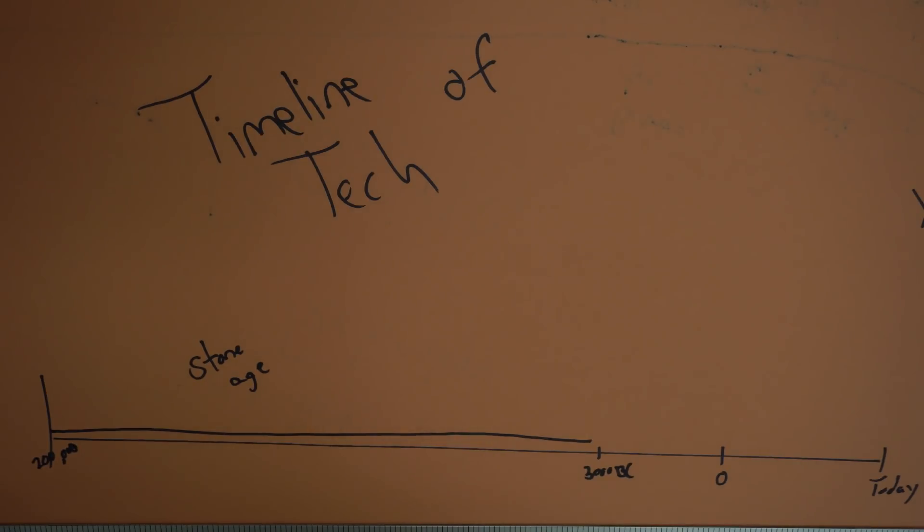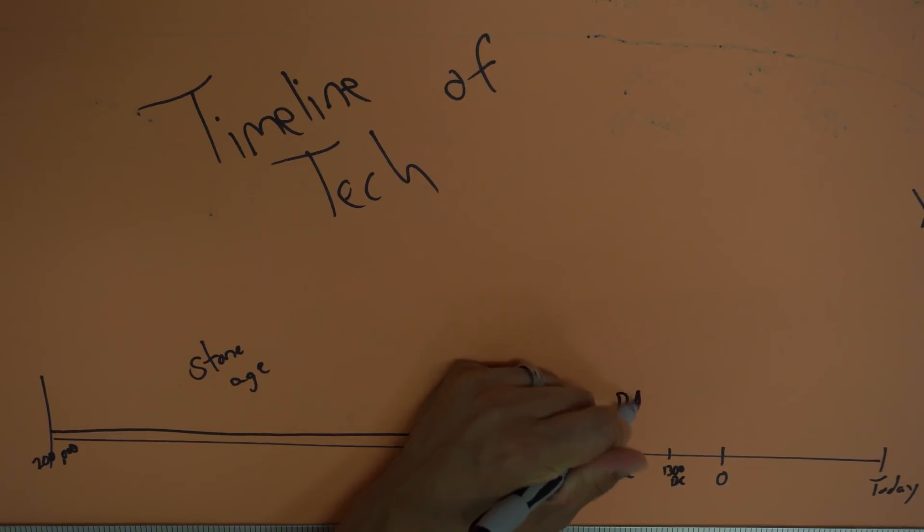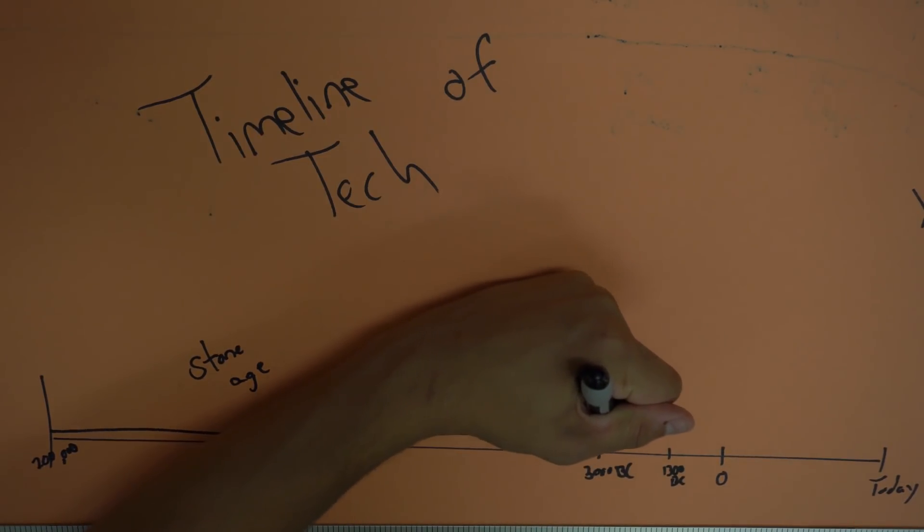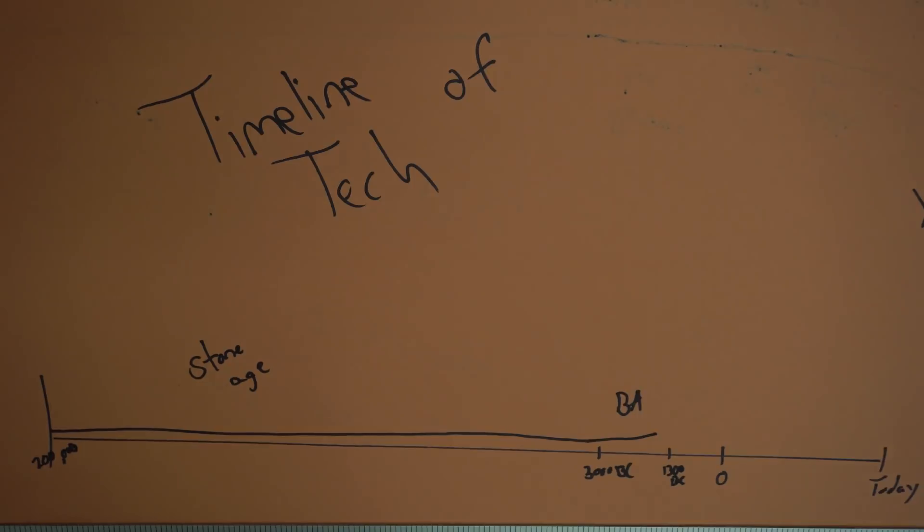We then discover how to use metal or start using metal because we get to the Bronze Age. The Bronze Age goes all the way here until about 12-1300. So we'll start in there, let's say 1300 BC. This is the Bronze Age. I'm just going to write BA. We start having a slight increase in things, but it's not like a crazy kick. It just is a very slight gradual change in what we're doing.